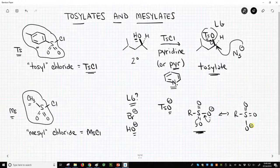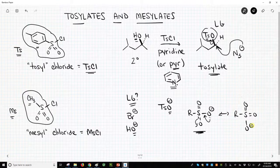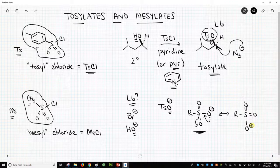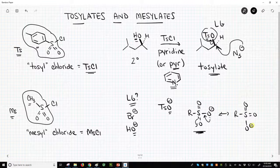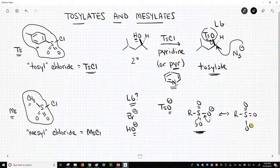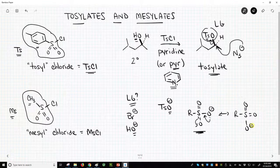So tosylates and mesylates are really mild ways to make alcohols into leaving groups. I'd say you're going to encounter tosylates a whole lot more often than mesylates, but mesylates do pop up here and there, especially if you're looking around the internet. So that's how another way to make alcohols into good leaving groups. Convert them into tosylates or mesylates.